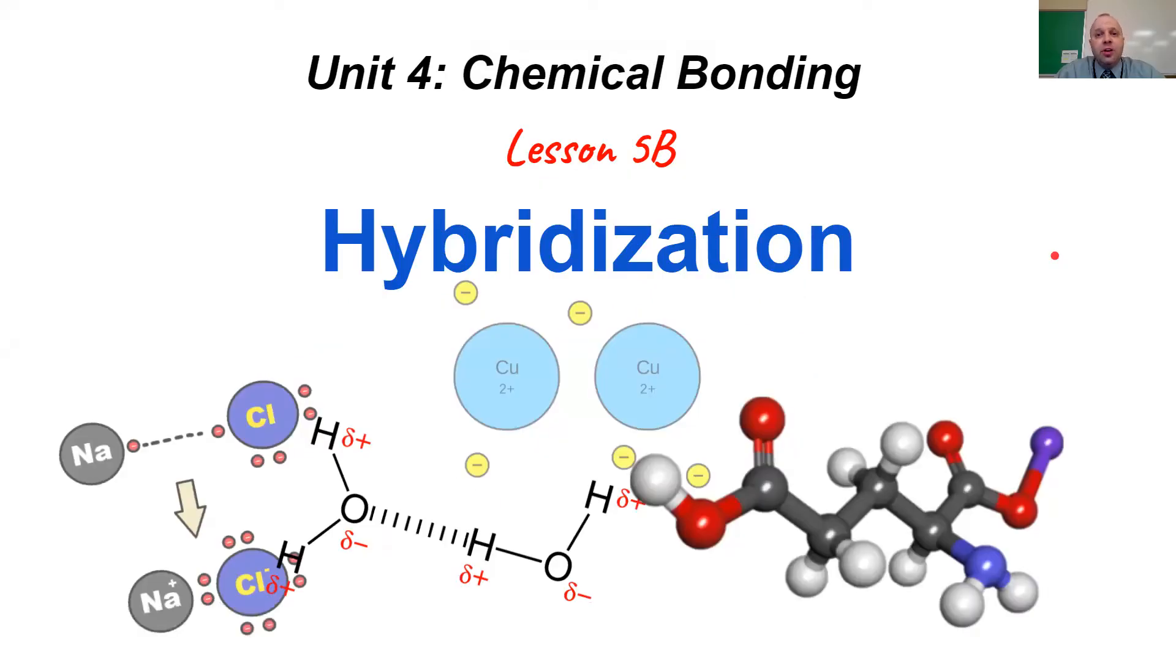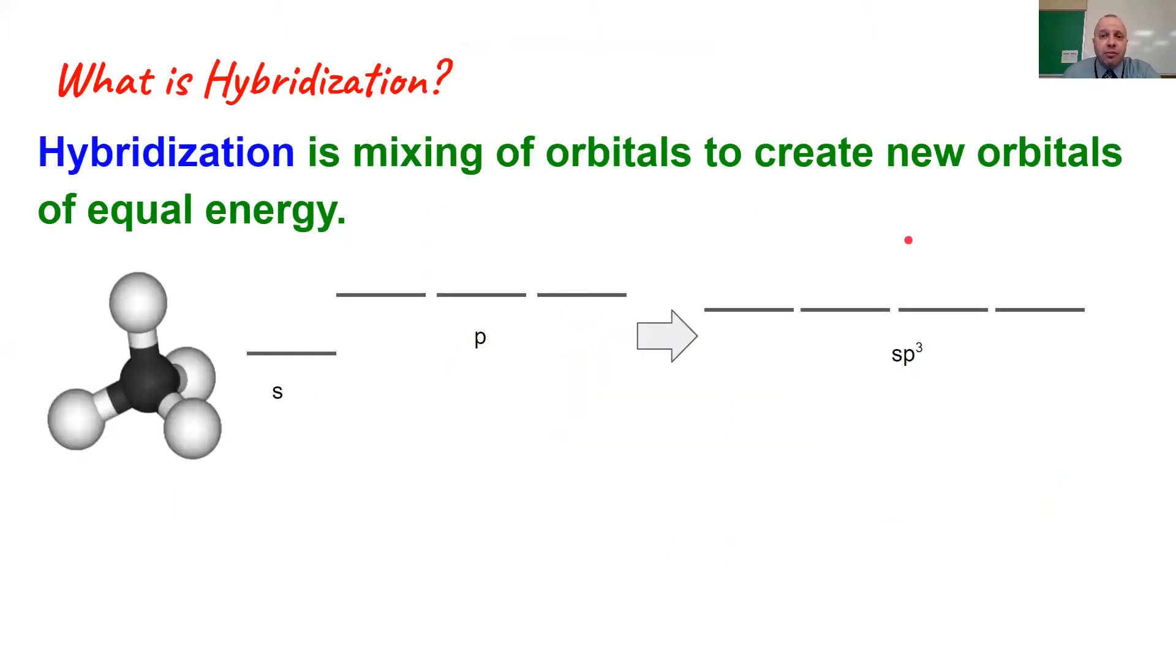Hello, this lesson is called Lesson 5B. It's going to talk about hybridization and it's intended for students in the accelerated honors level for Cyber Chemistry. If we take a look at the definition here, hybridization is the mixing of orbitals to create new orbitals of equal energy. So it turns out when atoms bond with other atoms,